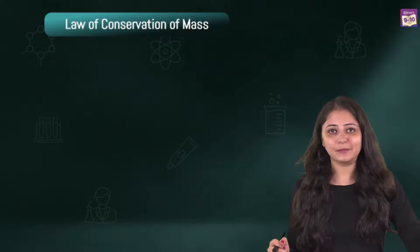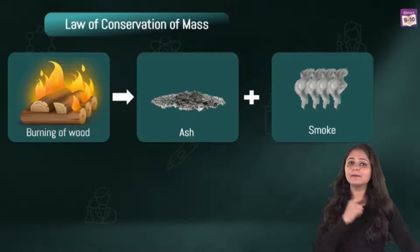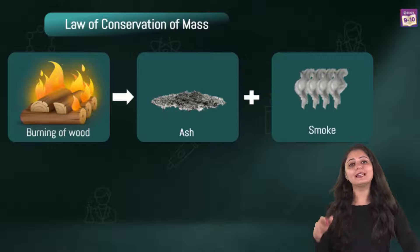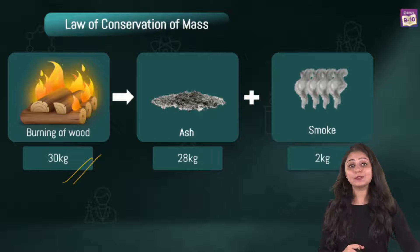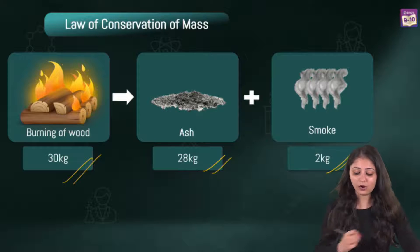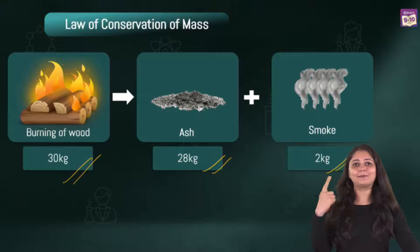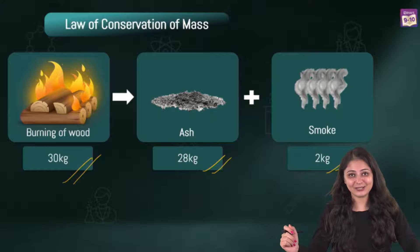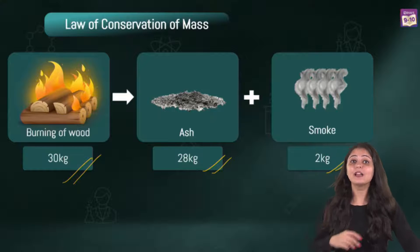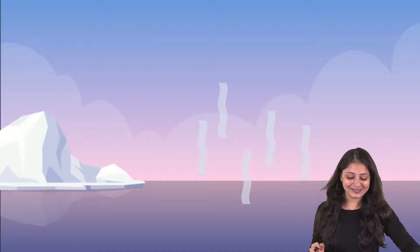Let me explain this with the help of an example. Say, for example, we talk about burning of wood. What happens? Ash is going to be produced and smoke is going to be produced. Let's say we have 30 kg of wood initially. We are burning it and it's producing 28 kilograms of ash and 2 kilograms of smoke. The total mass of reactants is 30 kg, and the total mass of products is 28 plus 2, again 30. Clearly, the mass of reactants is equal to the mass of products, and this conservation of mass is actually happening all the time and everywhere.